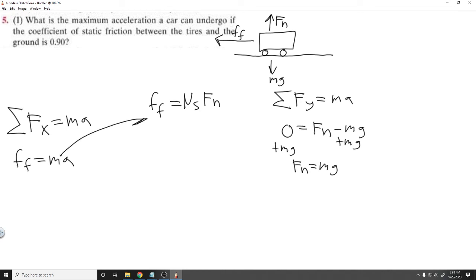And so notice now if we plug this in here, we're going to be able to solve for a. If I plug in these in for each of these, we're going to get ma equals mu sub s, which is the coefficient of static friction, which we know what it is. It's 0.9.